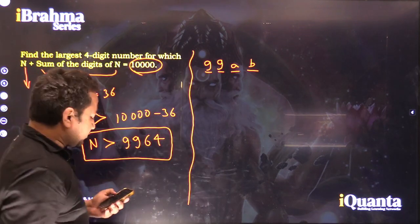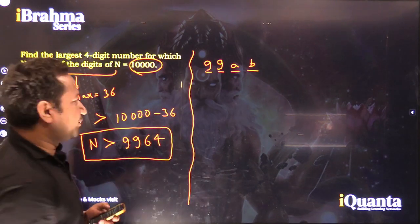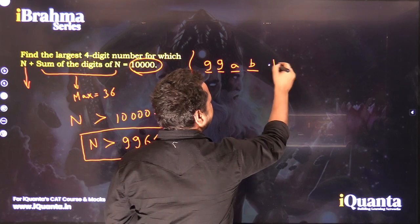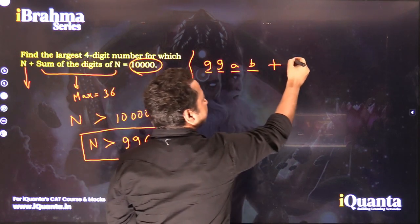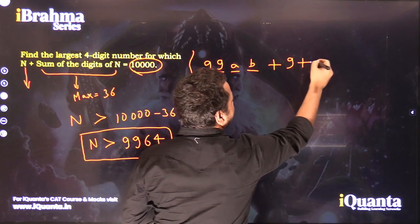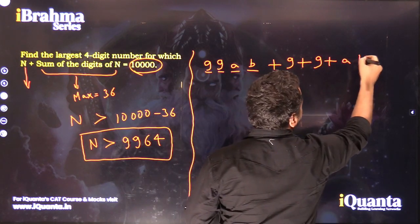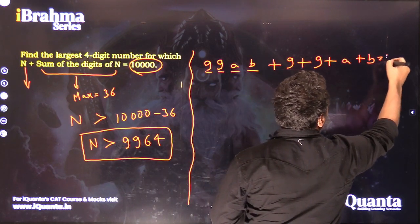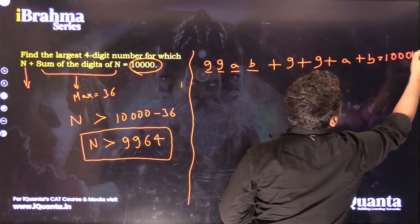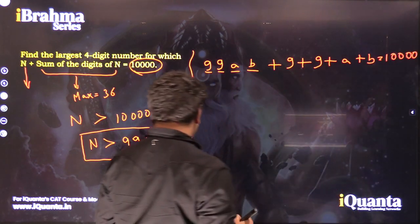So this should be the number. Now if I add the sum of the digits, which is equal to 9 + 9 + A + B, this should be equal to 10,000.